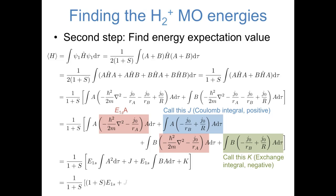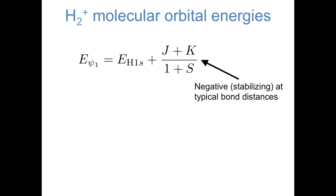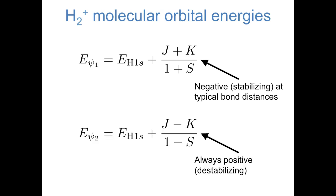So now we can write out this expression again and recognize that the remaining integrals are things that we can solve. The integral of A squared we know is 1 because A is normalized, and the integral of B times A we've already defined as capital S, an overlap integral. So we can simplify this a little bit more and find that the energy of psi 1 is the energy of a hydrogen 1s atomic orbital plus a collection of terms. This collection of terms actually turns out to be negative at typical bond distances. So the energy of this molecular orbital is a little bit lower than the energy of an atomic 1s orbital. To summarize, we found that the energy of the molecular orbital psi 1 is the energy of an atomic hydrogen 1s orbital minus a little bit, so it's stabilizing at typical bond distances. While we didn't solve for the energy of psi 2, we could have found that it's the energy of an atomic hydrogen 1s orbital plus a little bit, so we have one orbital that's stabilizing and one orbital that's destabilizing.